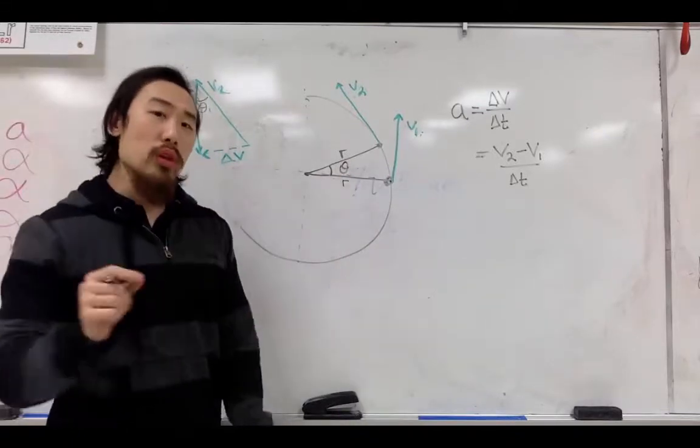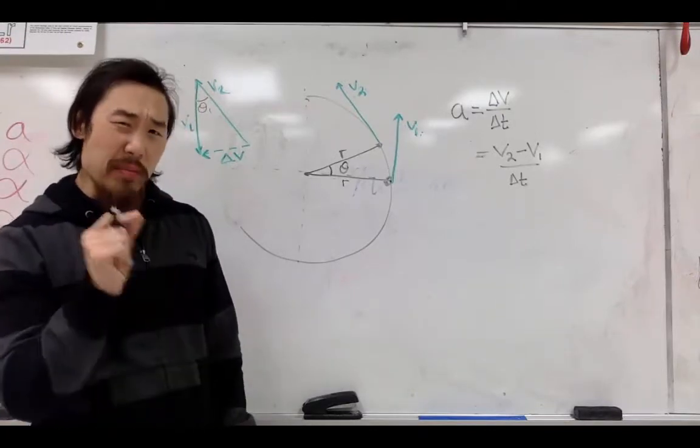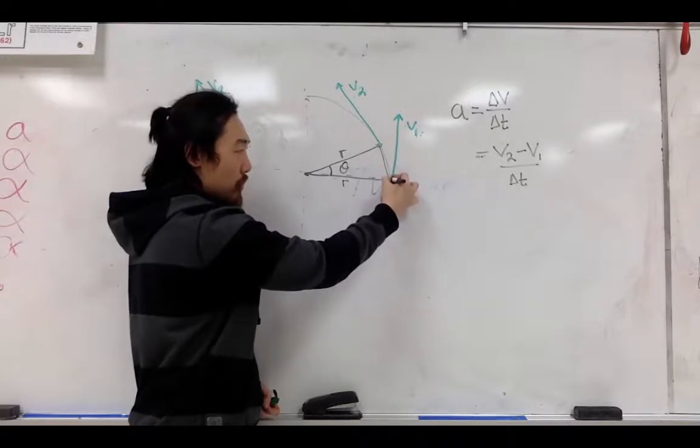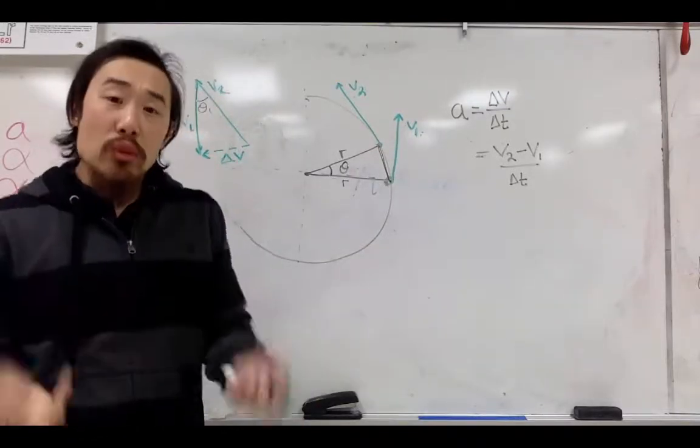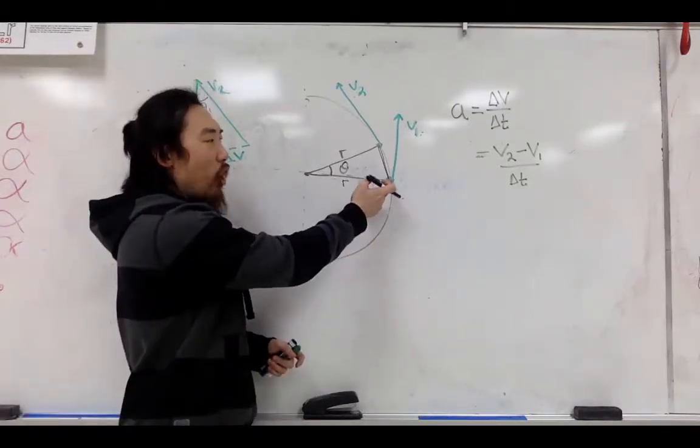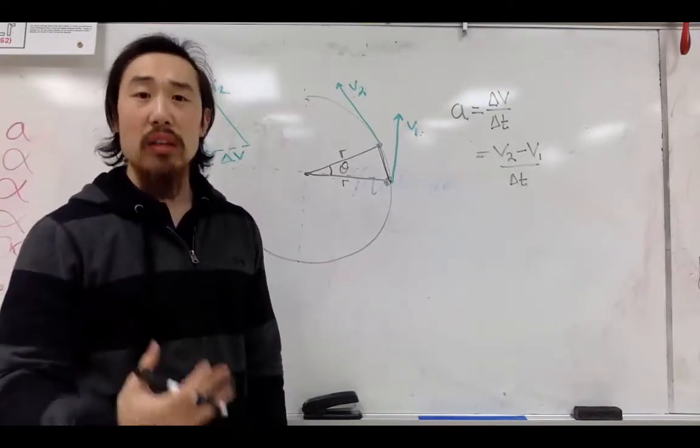Now, remember what we started off with. We started off with saying that this theta is extremely tiny. And if that theta is extremely tiny, then the distance from here to here we are claiming is a straight line. And the reason why we're claiming that it's a straight line is, one, it makes our life easier, but because the arc length is so small, we are assuming that it is, in fact, a straight line.